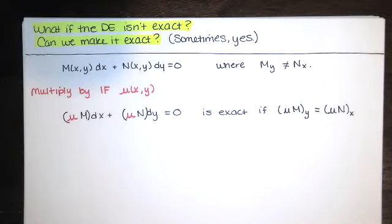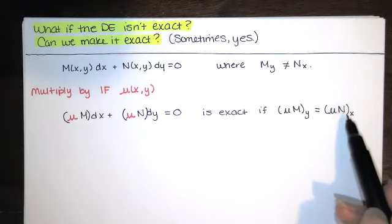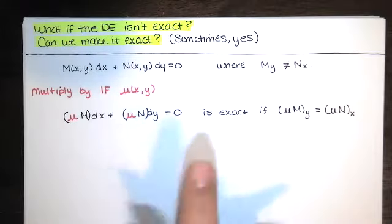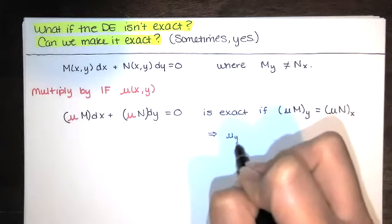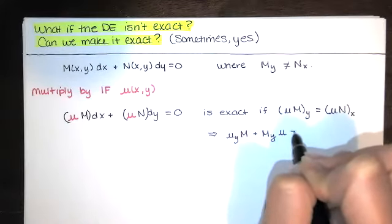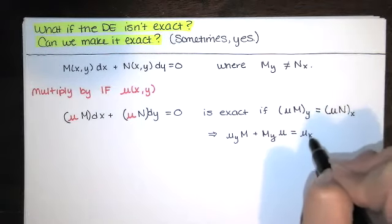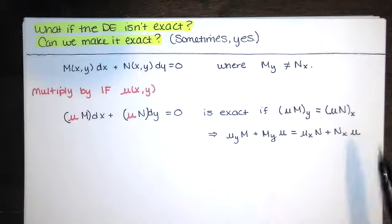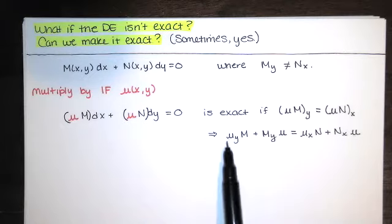So sometimes it's possible to take this differential equation, multiply everything by μ, and the resulting differential equation might be exact. It will be exact if the partial of μM with respect to y equals the partial of μN with respect to x — the same condition as before, but now with this unknown function μ involved. When we take the partial of the product with respect to y, we must use the product rule.